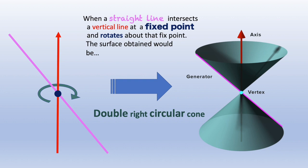The parts of a double right circular cone are the axis, where it is perpendicular to the base, and the generator, and also the vertex, where the two cones are connected.